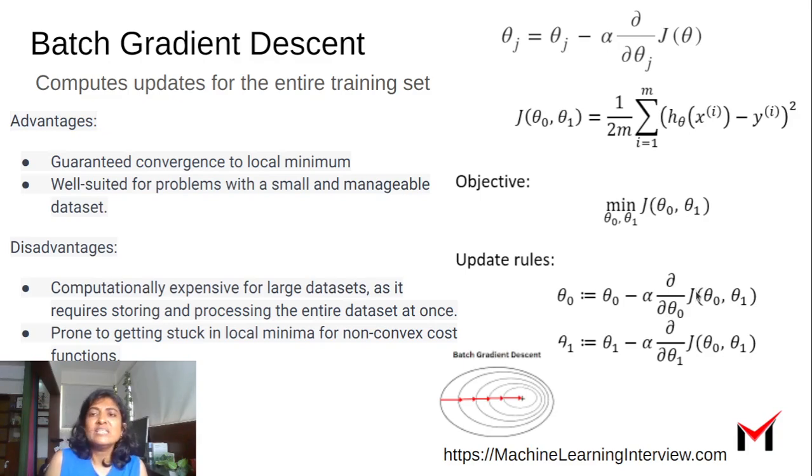So what is nice about batch gradient descent? The nice thing is it's guaranteed to converge to a local minimum, and it's well suited for problems with small and manageable datasets.